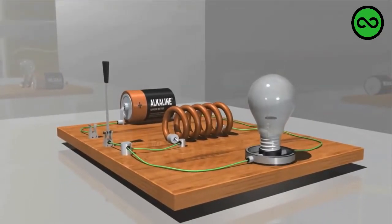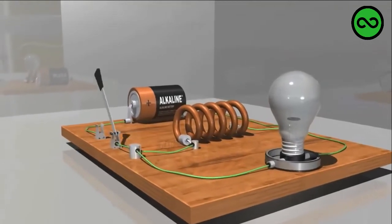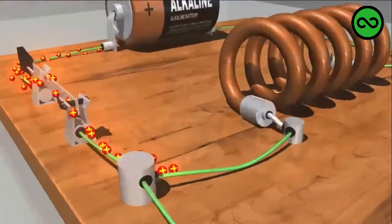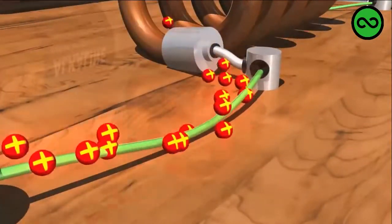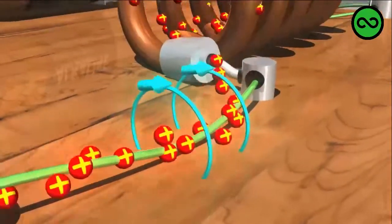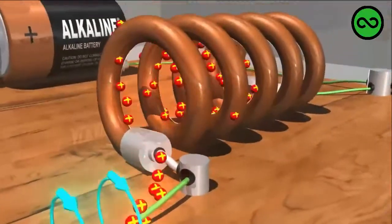When we power this circuit, the electrons in the current create a magnetic field around the wire as they move through it, as shown by these blue arrows. If the wire is formed into a coil like this inductor, the magnetic field lines converge in the center.